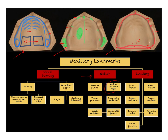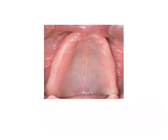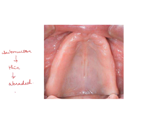Relief areas are typically those with vital structures underneath — nerves or vessels — where pressure cannot be applied, such as the incisive papilla. The second reason an area becomes a relief area is that its submucosa is very thin, making it easily abraded and ulcerated. The mid palatine raphae has thin mucosa, so you do not want the denture to be in intimate contact with that area.